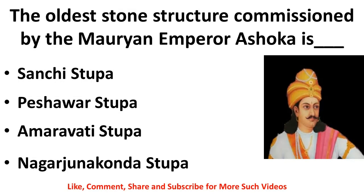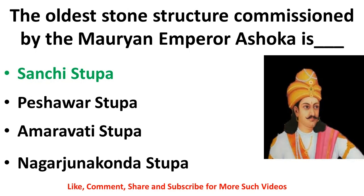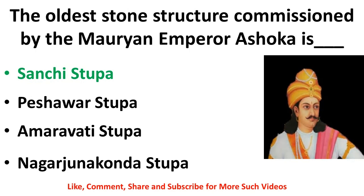A question about Sanchi Stupa has appeared in previous exam papers: 'The oldest stone structure commissioned by the Mauryan Emperor Ashoka is — Sanchi Stupa, Peshawar Stupa, Amaravati Stupa, or Nagarjunakonda Stupa?' The correct answer is Sanchi Stupa. I wanted to cover this because this is how it was asked in previous year papers. With this we come to the end of this quiz. I hope you learned something — please subscribe to this channel for more content. Thank you for watching, see you again.